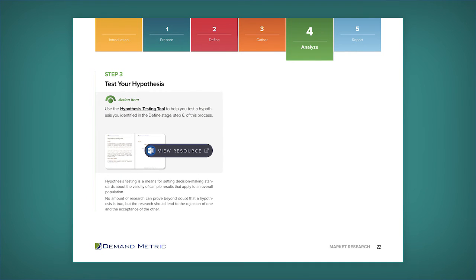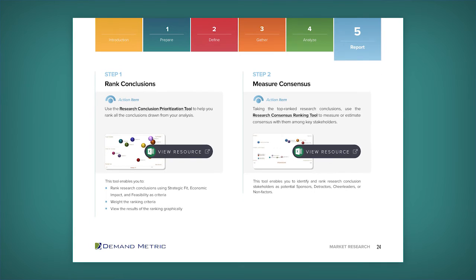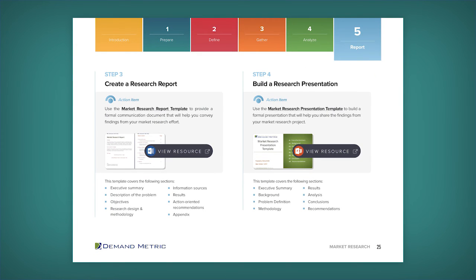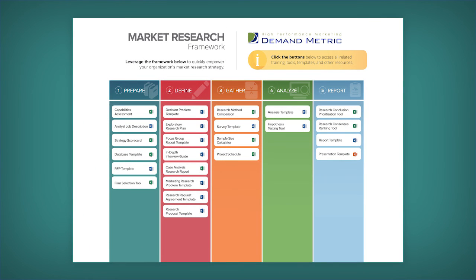In the final stage, Stage 5, we're going to focus on reporting. The first step is to rank your conclusions, then measure consensus, followed by creating a research report, and ultimately building your research presentation. Remember that you can access all of these resources on a single page at the start of this guide, and on its own with the market research framework.